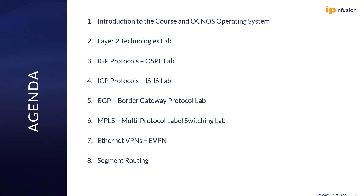We are also going to have some labs on Quality of Service. I'm going to show you how we can police, mark, shape, and map different types of markings to each other. Other features such as storm control are going to be part of that, and in the end I'm going to speak about queues and how you can configure queuing in ICNAS operating system.